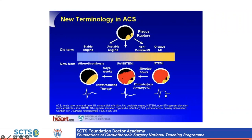Chronic stable angina patients get chest pain with exertion; unstable angina patients get chest pain with minimal exertion or at rest, often without ECG changes or may have T-wave inversion, with a negative troponin. In NSTEMIs and STEMIs there is typically release of myocardial enzymes.